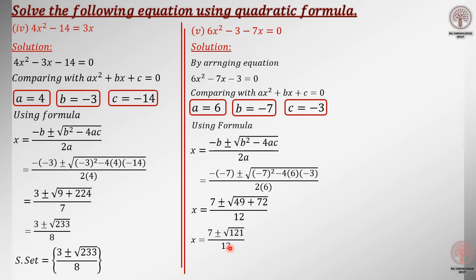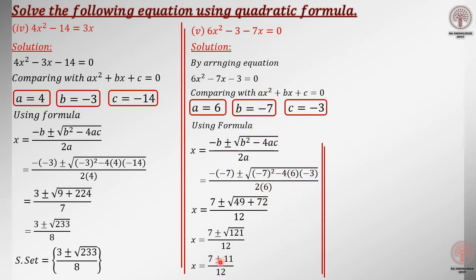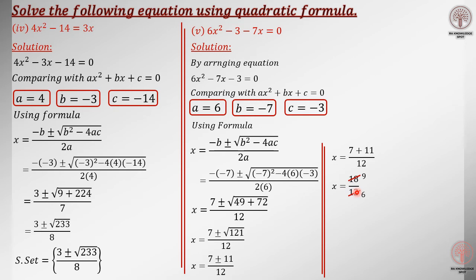Will you please tell me: is 121 a perfect square or not? Yes, this is a perfect square, and the number is 11. Now, taking the positive case: 7 plus 11 divided by 12. After adding, you get 18 divided by 12. For further cancellation, you will get: 2 times 9 is 18, 2 times 6 is 12 — giving 9 over 6 — then 3 times 3 is 9, 3 times 2 is 6, which gives 3 over 2.